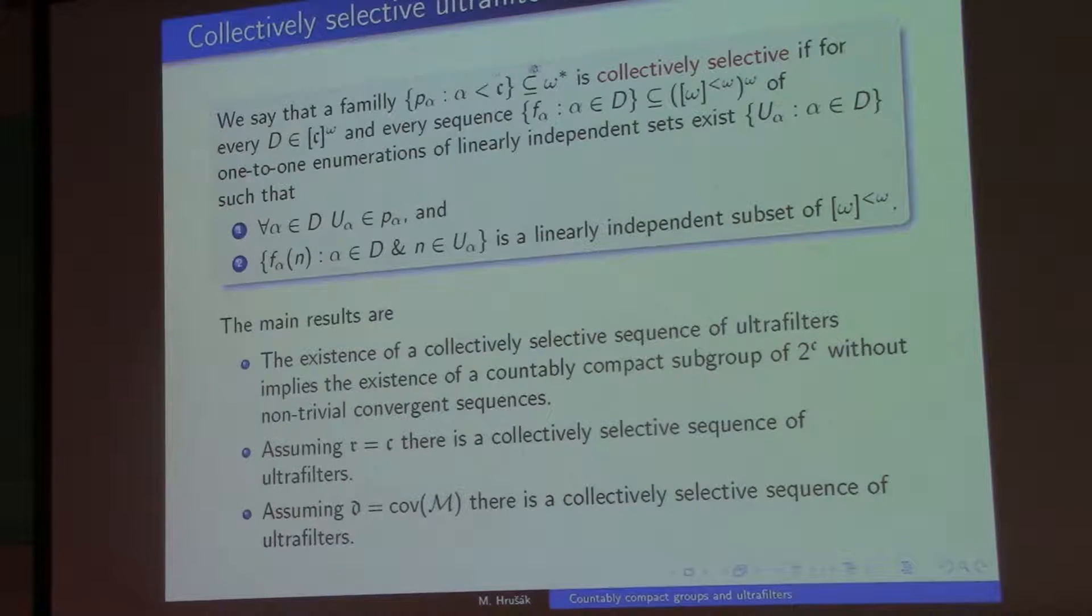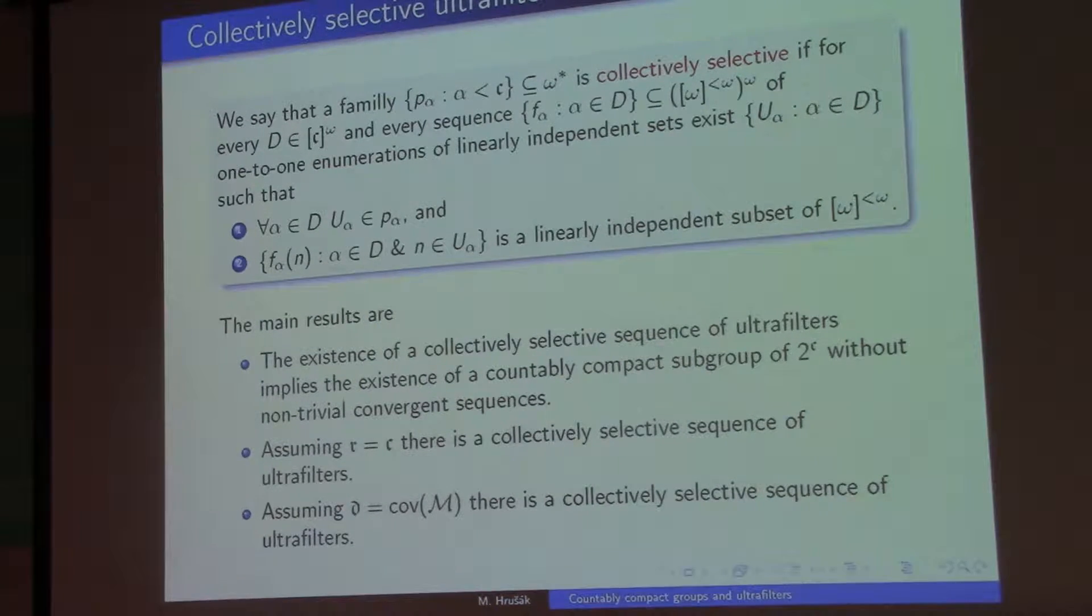So I just want them collectively to do the same work as the selective ultrafilter did alone for the p-compact case. So what does it mean? So call a family of ultrafilters p_α, α less than c, collectively selective. So that whenever I take a countable subset and I take sequences of functions into the countable boolean group, or into c-to-less-than-ω, it doesn't make a difference, which are one-to-one enumerations of linearly independent sets,